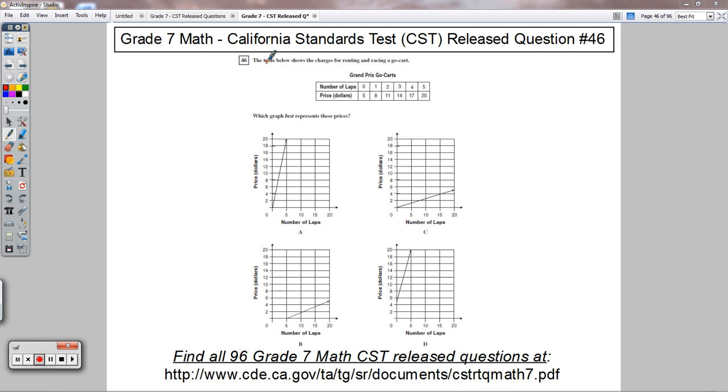This is question 46. It says the table below shows the charges for renting and racing a go-kart. Love me some go-kart racing. That is a good time right there. So we have the number of laps and the price in dollars. It looks like each time you go up a lap, you're adding $3 to that price, and we're starting at $5.